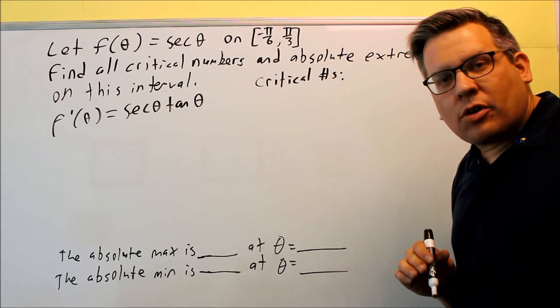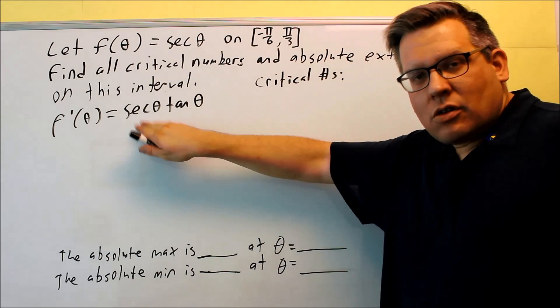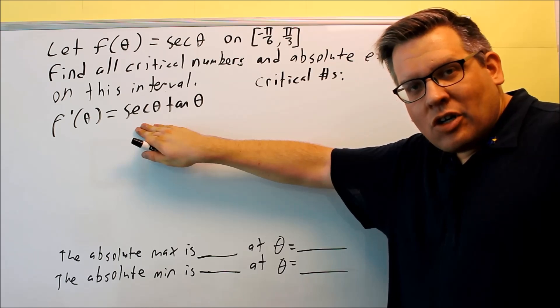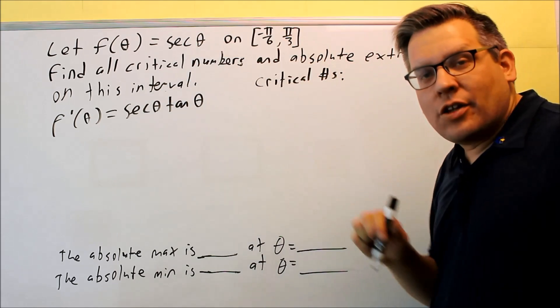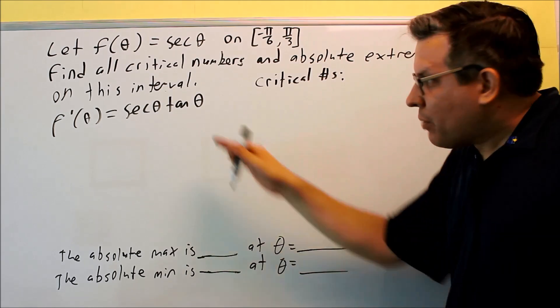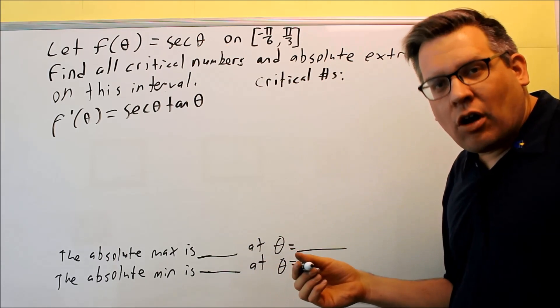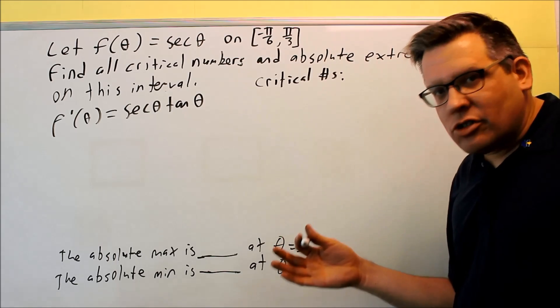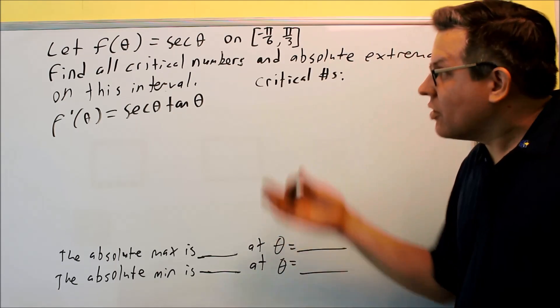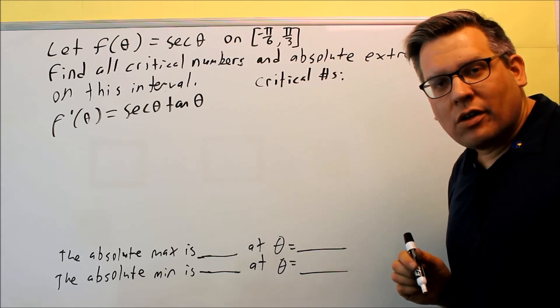Remember that a critical number makes the derivative undefined, but it has to be defined on the original one. If I put pi over two into the original one, I'm going to get undefined for that also. So actually pi over two is not going to be a critical number because it does not make the original one defined.